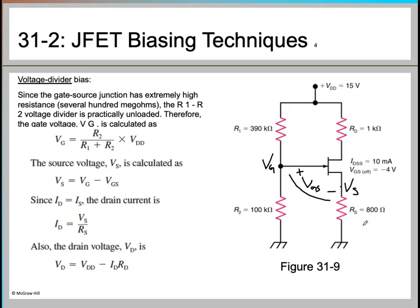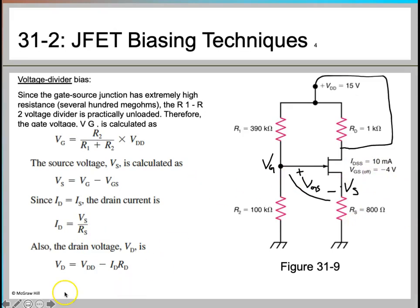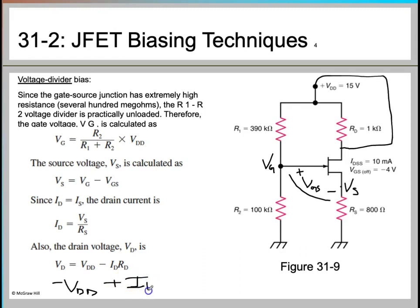IS equals VS divided by RS. You first find VG using the voltage divider formula, then use VGS (which may be given in the problem) to calculate VS, and finally calculate drain current using VS and RS. RS can also be calculated using the formula from the previous slide if not given.